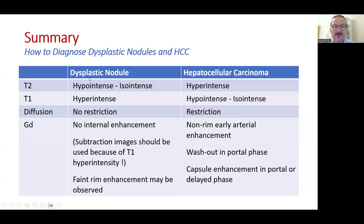In summary, a dysplastic nodule is hypo-intense or iso-intense on T2, hyper-intense on T1 because of the iron content, with no diffusion restriction and no enhancement. Hepatocellular carcinoma is hyper-intense on T2, shows diffusion restriction, and has a typical contrast enhancement pattern: non-rim early arterial enhancement, washout in the portal phase, and capsule enhancement in the portal or delayed phase.